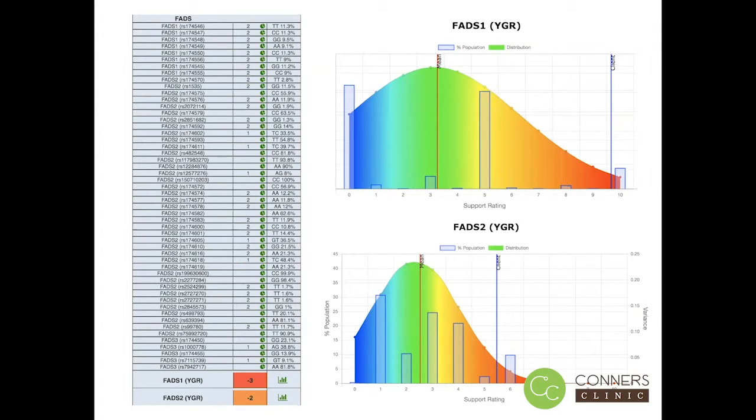ATP is what our cells use as energy to perform their function. So if somebody is not converting their nutrients properly, they will most likely feel fatigue. When we're looking at a genetic profile, we're looking at all of the genes associated with the Krebs cycle. This FADS gene is just one of those gene families in this section.